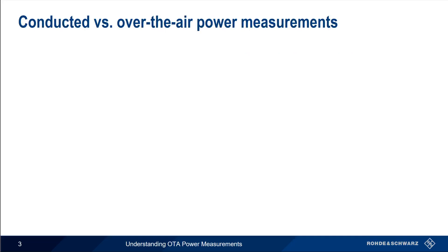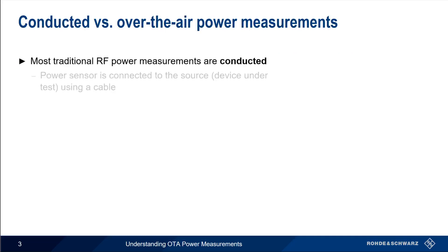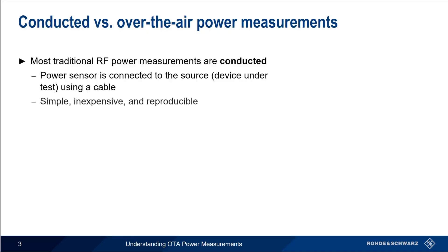Most traditional RF power measurements are conducted measurements. In other words, our power sensor is connected to the source or the device under test using a cable. Conducted measurements are simple, inexpensive, and reproducible, and are the preferred methodology for the vast majority of RF power measurements.